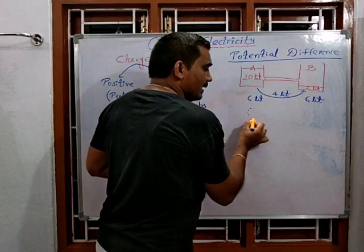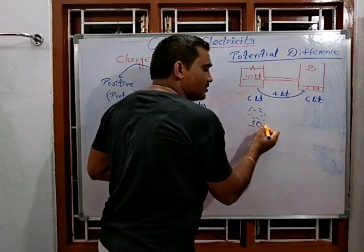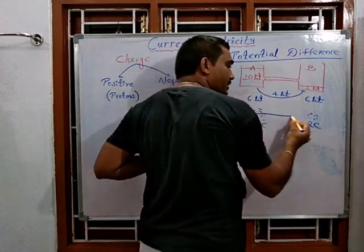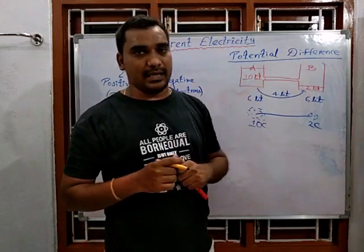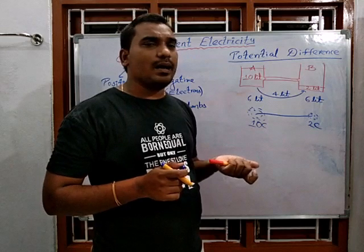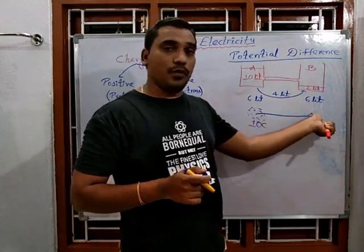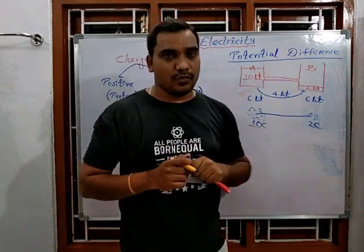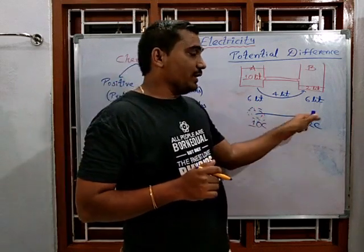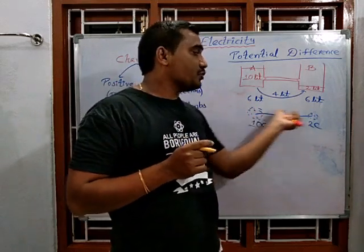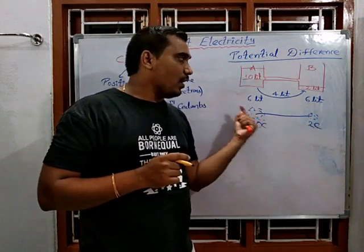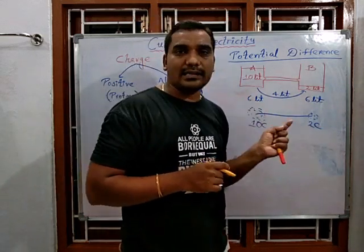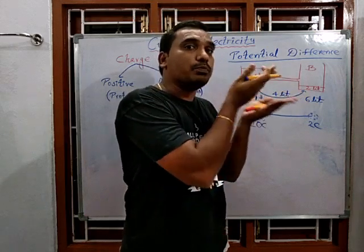In the same way, consider two points — here there are 10 coulombs of charge at one point and 2 coulombs at another. When a wire connects them, there is a charge difference between these two points, which leads to the transfer of charge from one point to the other, and this continues until both points become equal with respect to charge.